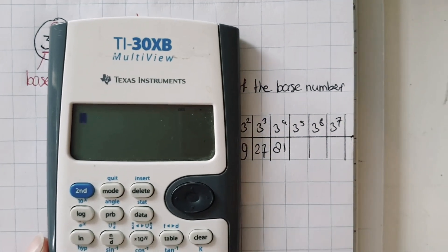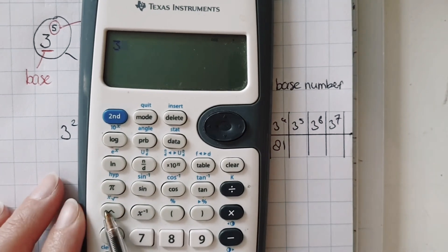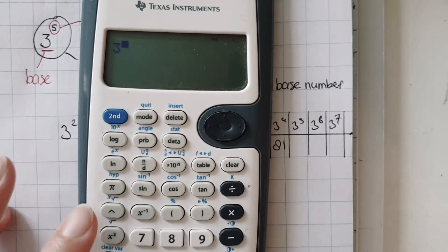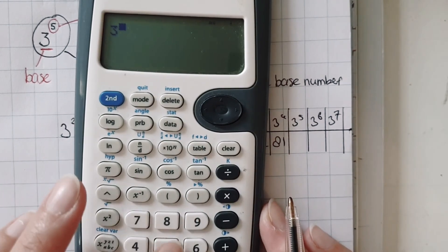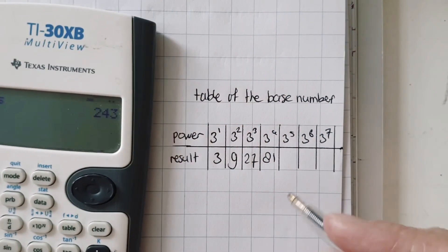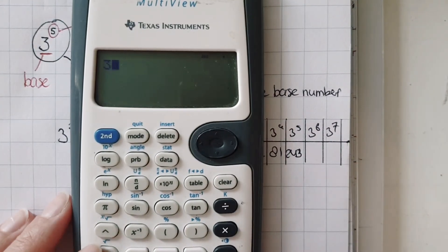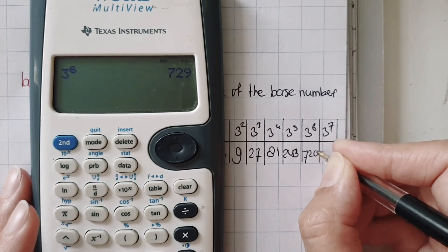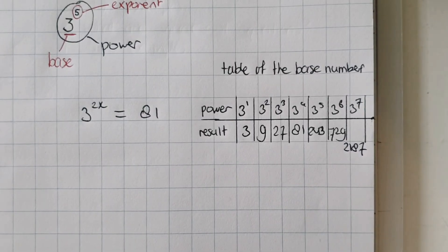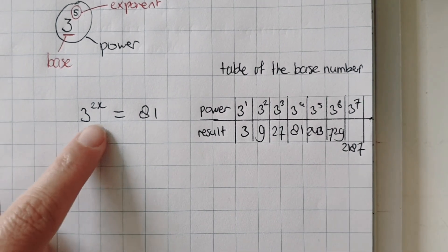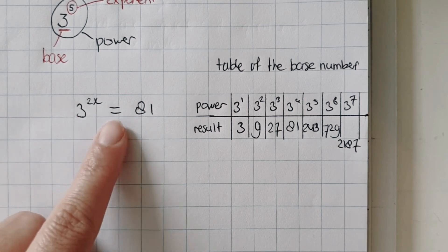For larger values, you can use your calculator: 3 to the power of — and then you use this button, press 5 — is 243. The table is done, and this is how it works. You have to make sure that on this side you only have the power, so there's nothing in front of it or behind it — for example, 5 times this, or 5 plus this. It's only the power.